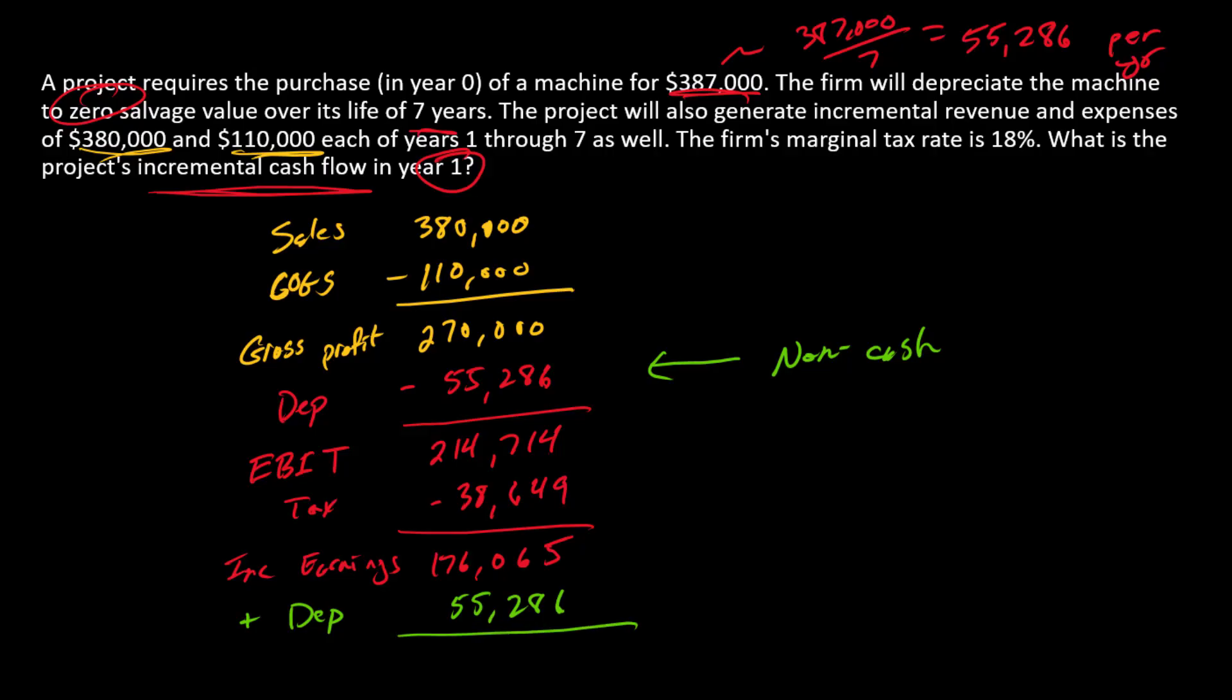Add that back, and we have $231,351. This is going to be incremental cash flows. And that is the answer. Note there's nothing else going on in the context of this problem, and so this actually would be the cash flow line that goes into the ultimate NPV calculation.